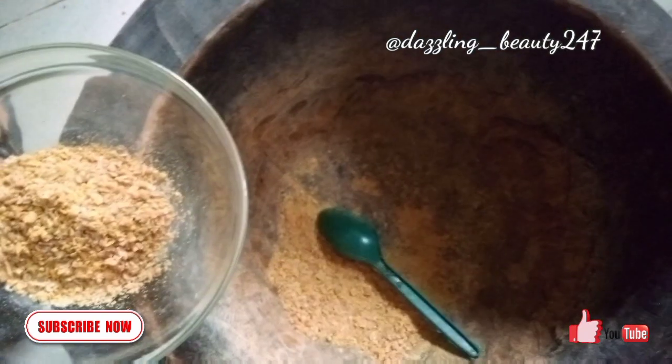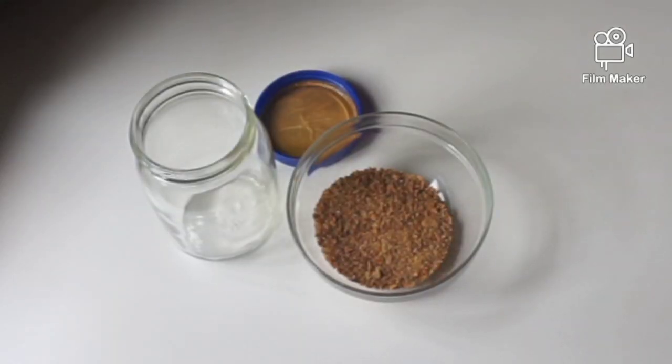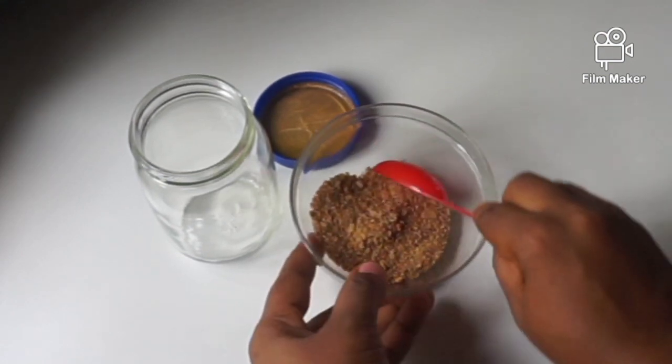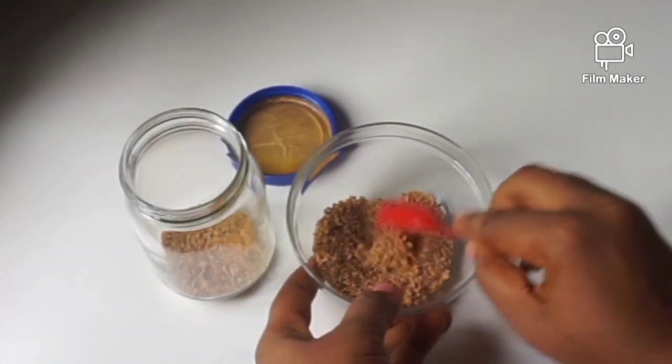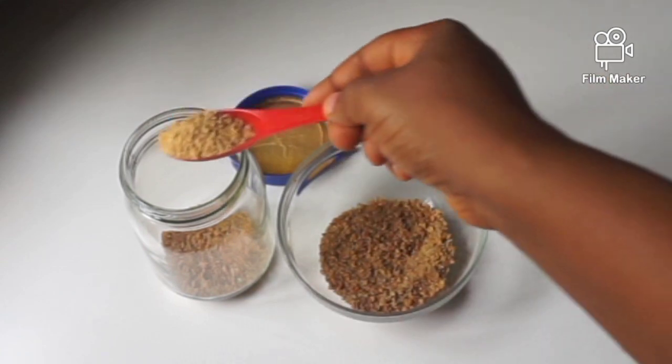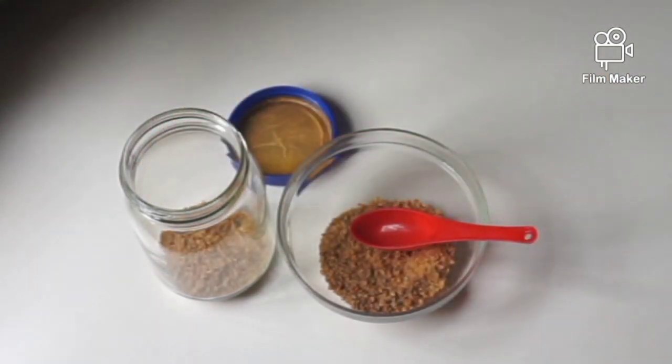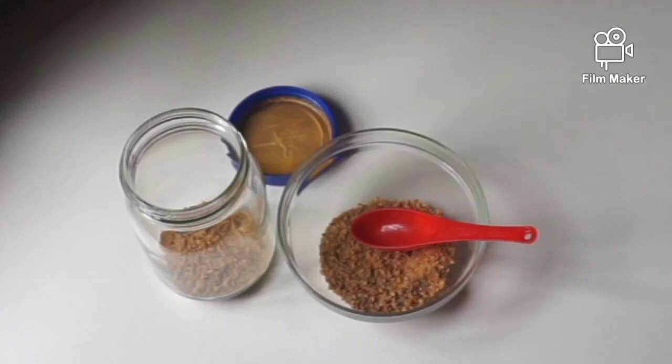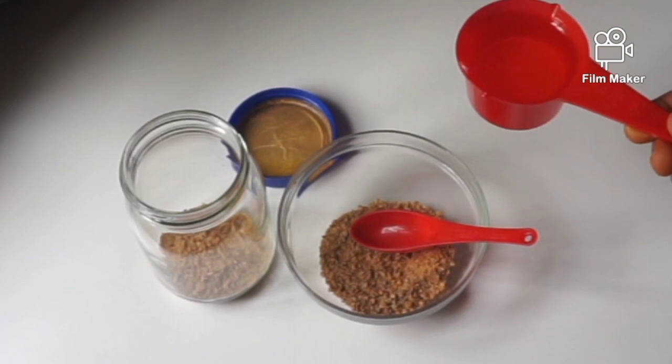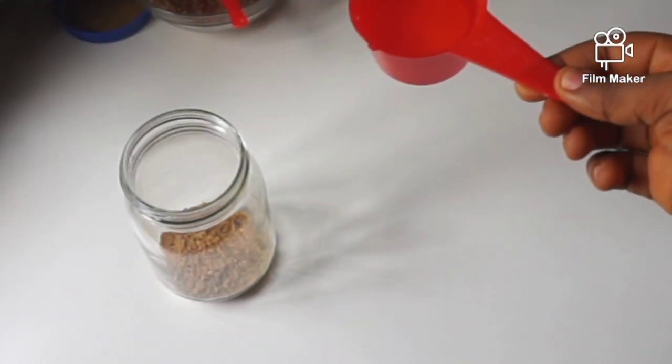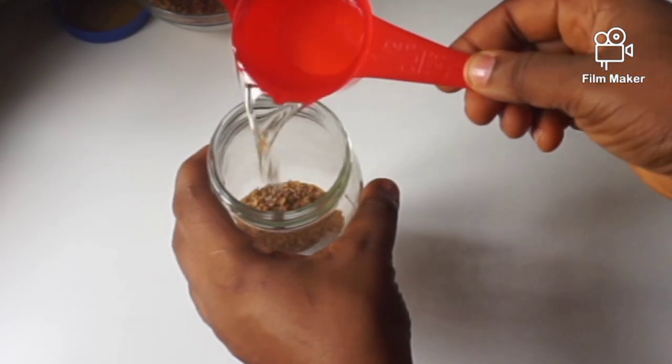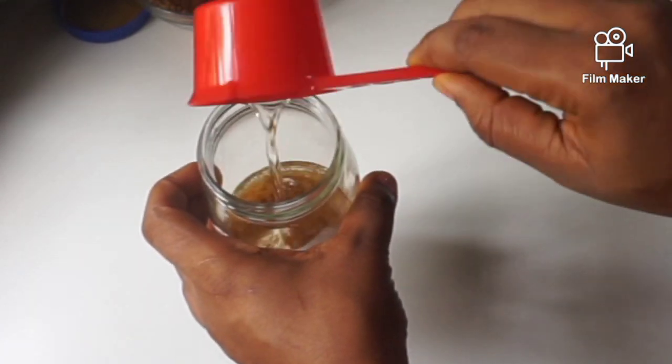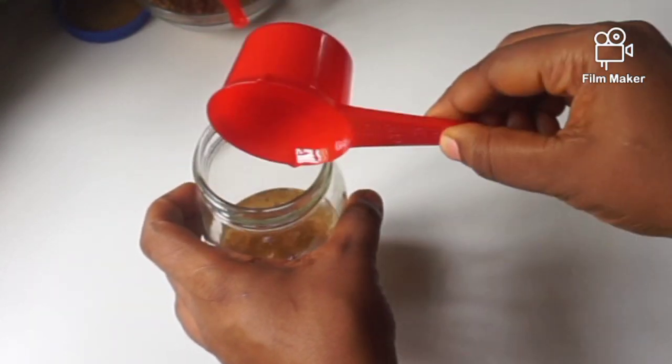I'll be making use of two tablespoons of fenugreek seeds, and I'll be transferring two tablespoons of fenugreek seeds into the jar. I'll be making use of 125 ml of sunflower oil, that's half a cup, and I'll be pouring it into the jar with the fenugreek seeds.